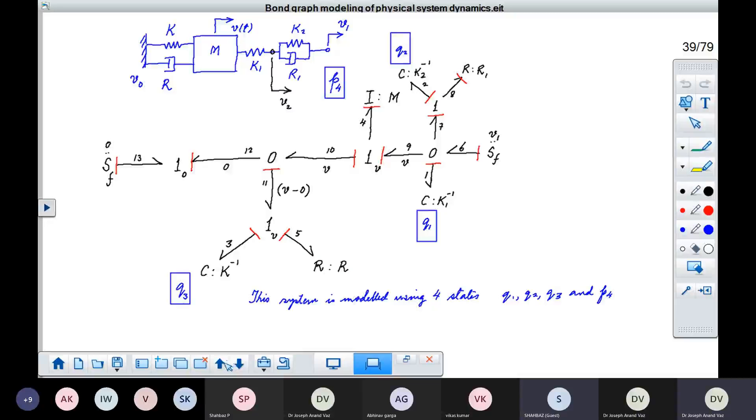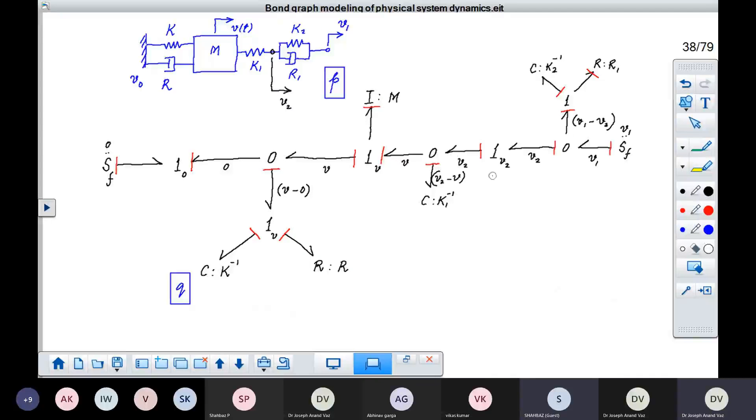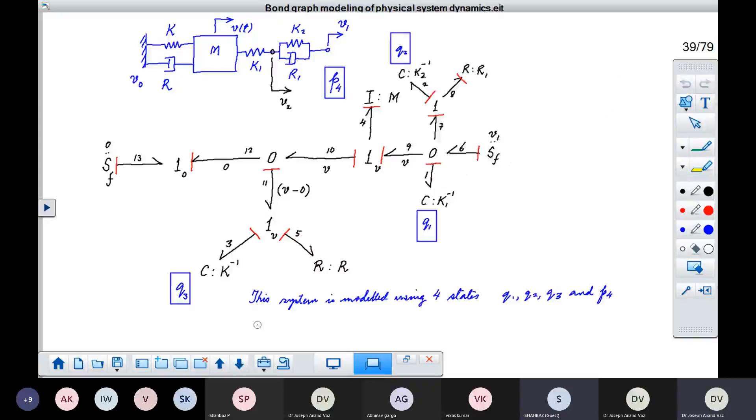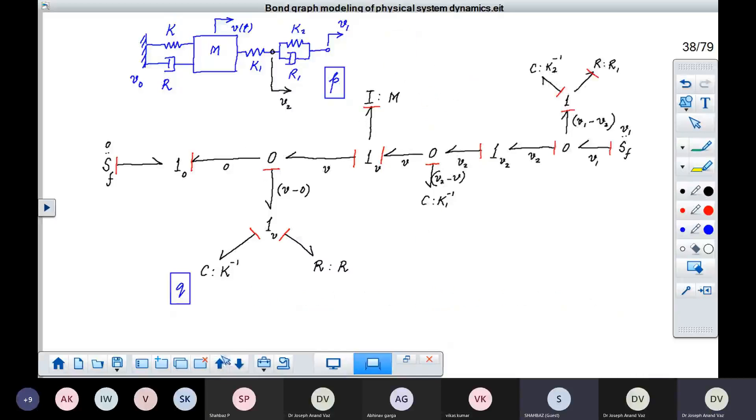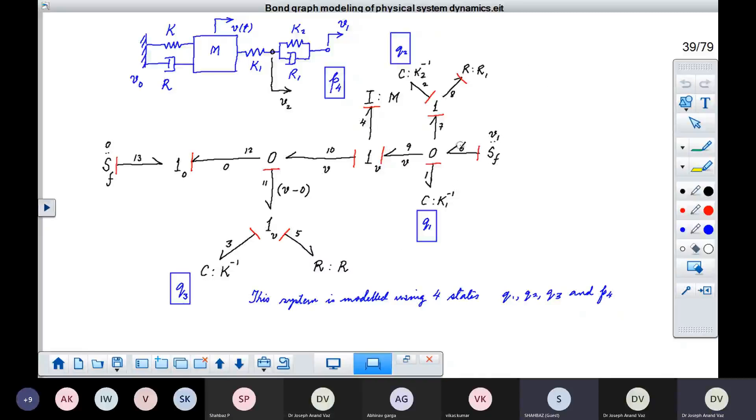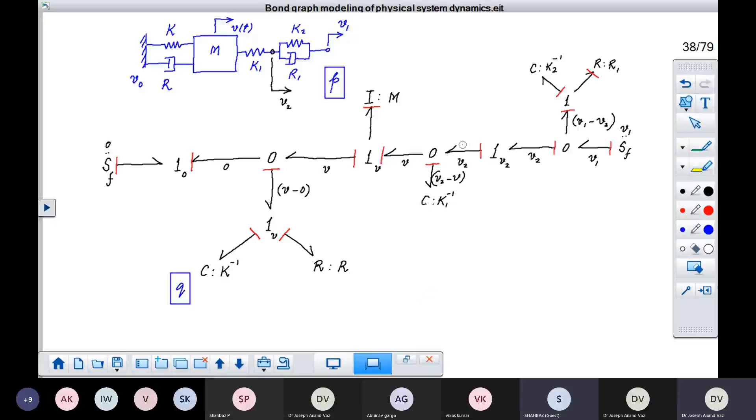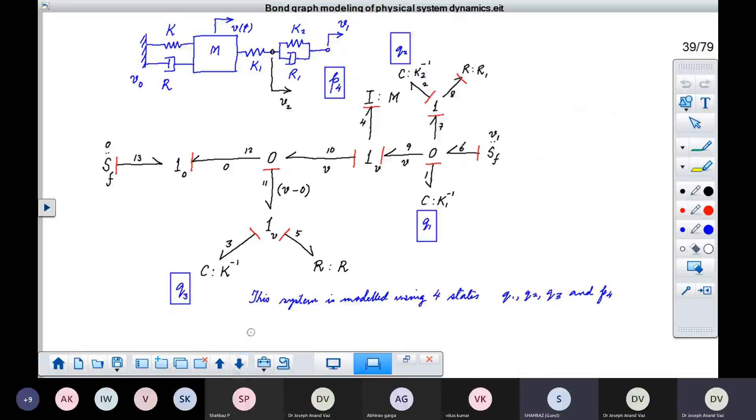We can simplify the system. We can simplify this system because there are these redundancies over here. So we'll simplify this system. So when you simplify it, you understand that this becomes redundant junction. It can be removed. And when you try to remove it, one junction, one zero junction, and this zero junction, they become the same. So you just place one on the other.